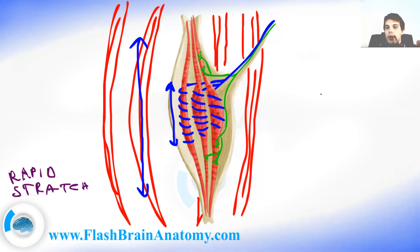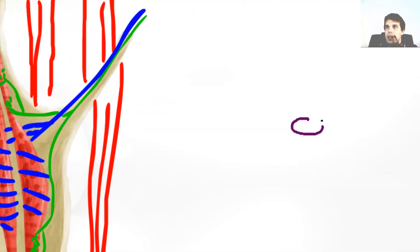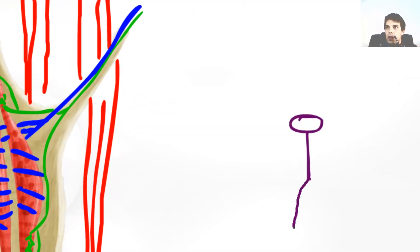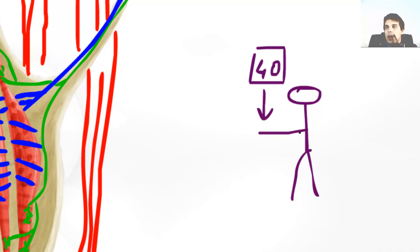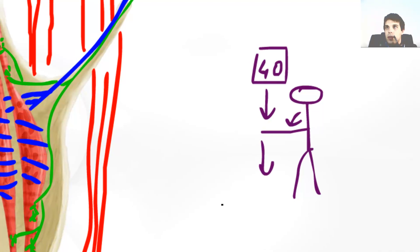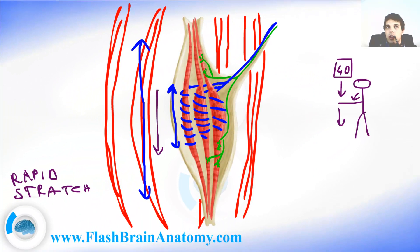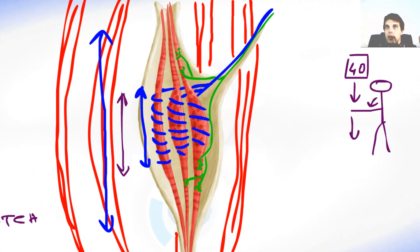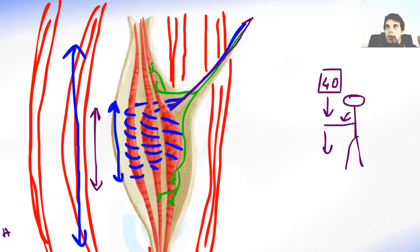Rapid stretch is really important for reflexes. For example, if somebody drops 40 pounds on your hands, this will cause a rapid stretch of your muscles. The stretch occurs in the extrafusal muscle fibers, and because the intrafusal muscle fibers are attached to the intramuscular connective tissue, they also stretch. They convert these impulses into a signal and send it to the spinal cord.